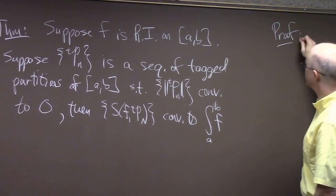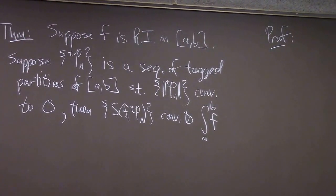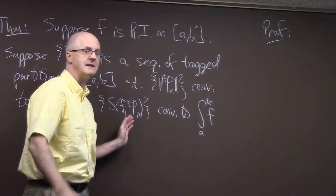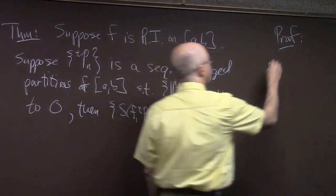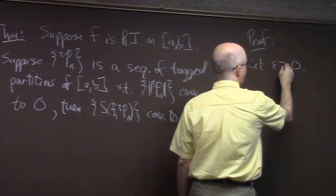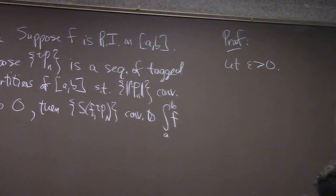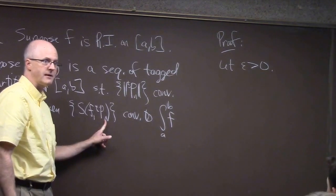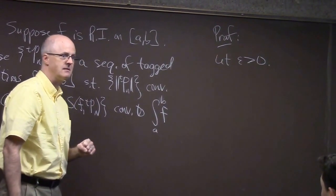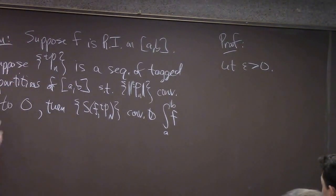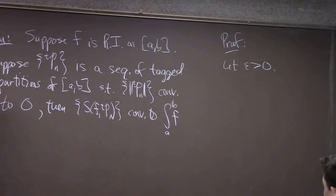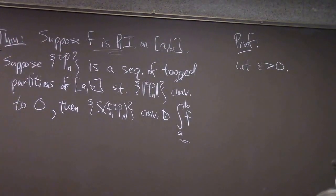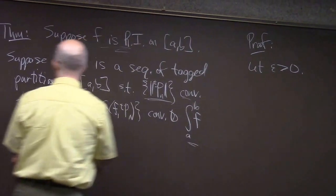Let's try a full proof of this without bothering with scratch work. The goal is to prove that this sequence of Riemann sums converges to the integral — that's a sequence of numbers, so we need chapter two. For any given epsilon greater than zero, I must find a capital N, a positive integer, so that the distance between a Riemann sum for little n greater than or equal to capital N and the value of the integral can be made less than epsilon. We need to use what we're assuming: it's Riemann integrable so the integral exists.